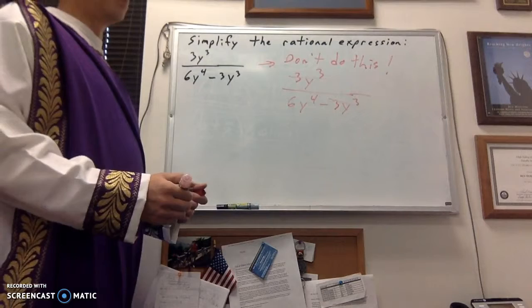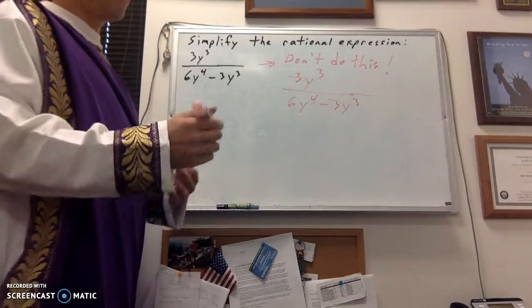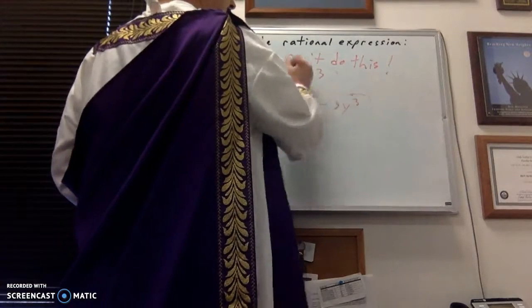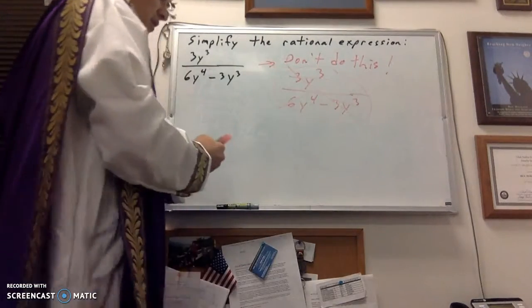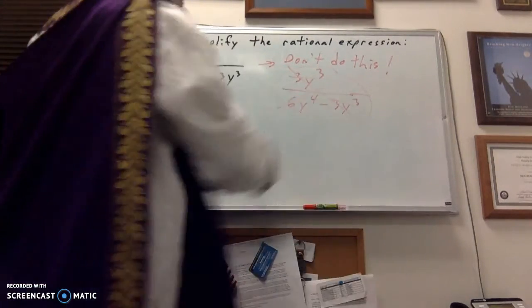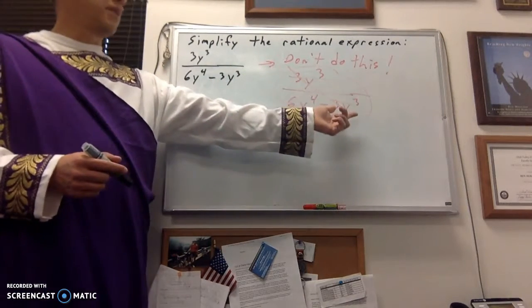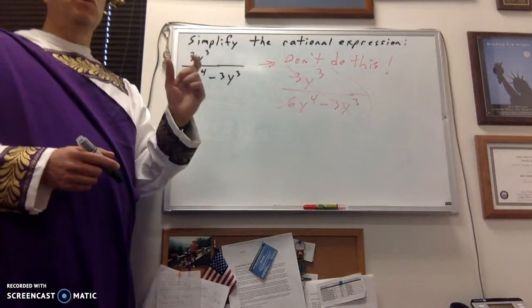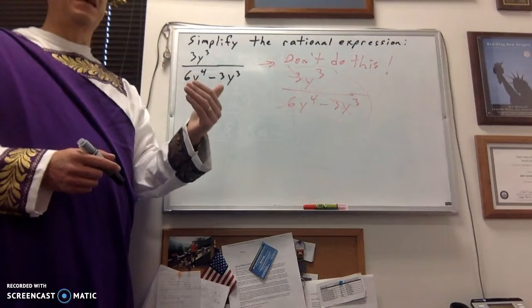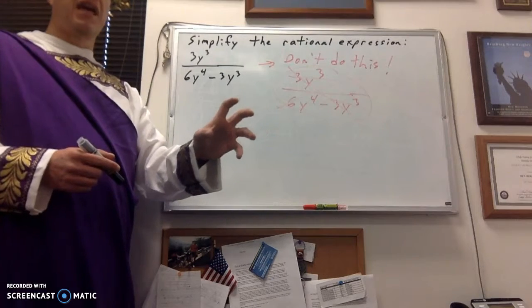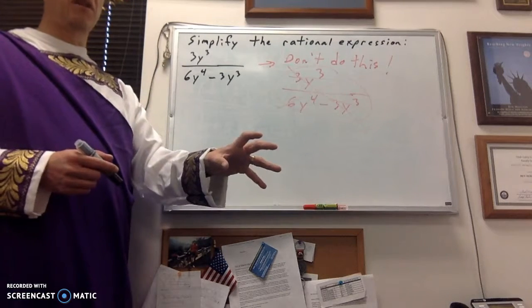Well, first of all, I can't stand when people use the word cancel, because that's not quite mathematically correct. So, I say divide out. Well, you can't do that, because when you're reducing a numerator with a denominator, what you're reducing, or what's dividing out, needs to be getting multiplied to the entire numerator, and multiplied to the entire denominator.